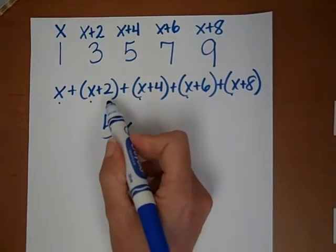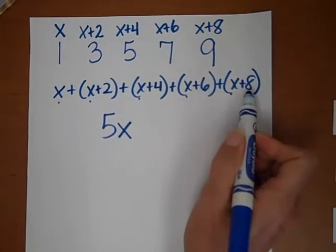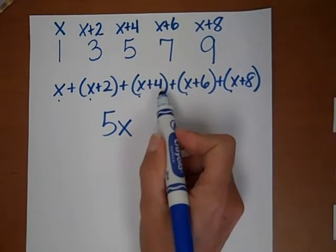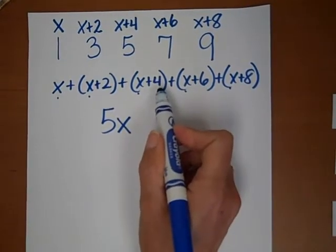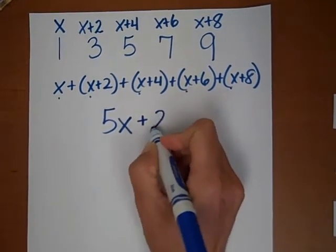Now, how many numbers do we have here? We have 2 plus 4 plus 6 plus 8. What is that? Well, we can combine the 6 and the 4 and get 10, and the 2 and the 8 and get another 10. So we have 20. 5x plus 20.